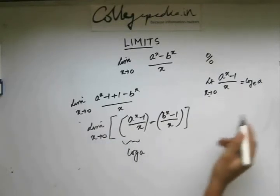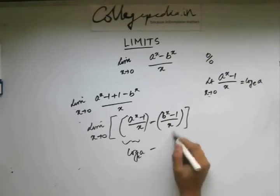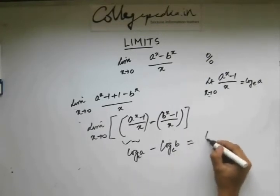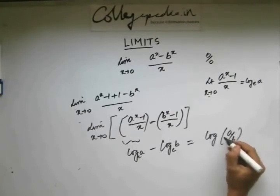Now this I can write it as log of a, as you can see from here, base e. And this is log of b. So using properties of logarithms, I can write it as log of a by b, base e.